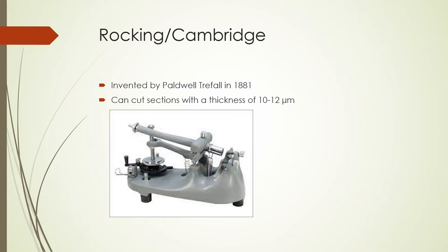Starting off with the rocking or Cambridge microtome — it was invented by Poundwell Trafal in 1881 and can cut sections with a thickness of 10 to 12 microns. As the name suggests, it cuts tissues in a rocking motion. Looking at the picture, it kind of looks like a mini seesaw with spring-load balances on one side, cutting tissues in a rocking motion back and forth, up and down.